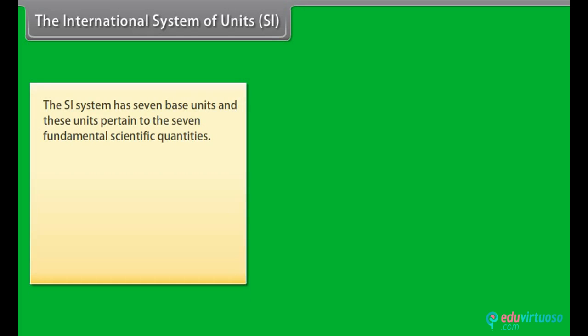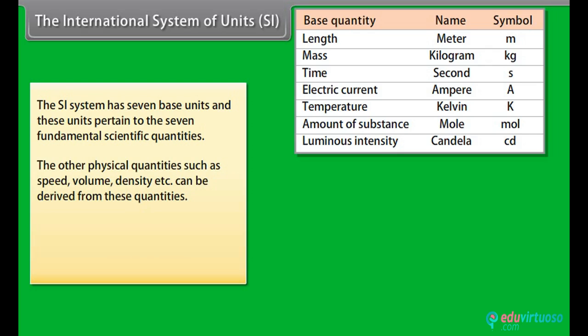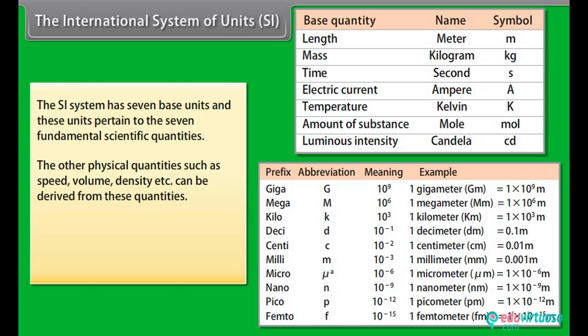The SI system has seven base units and these units pertain to the seven fundamental scientific quantities. The other physical quantities such as speed, volume, density, etc., can be derived from these quantities. The definitions of the SI base units are given in table. The SI system allows the use of prefixes to indicate the multiples or sub-multiples of a unit.